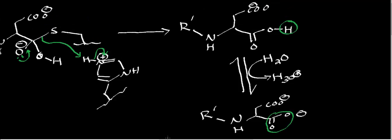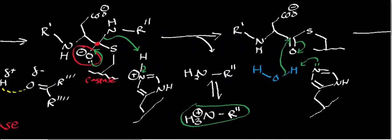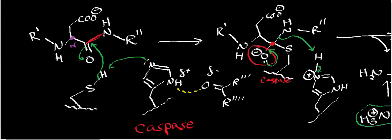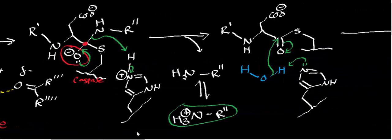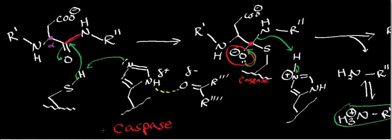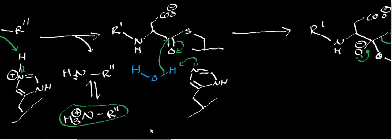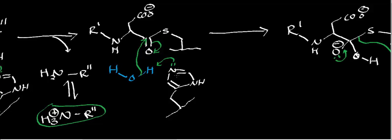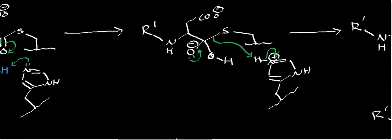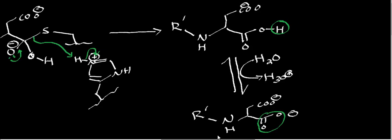What I also want to show you about the protease mechanism is that it's actually very sequential — and this goes for both cysteine proteases and serine proteases. Notice what's happening: deprotonate the nucleophile, nucleophilic attack, generation of tetrahedral intermediate, pi bond reforms, and we lose a leaving group. We're just doing nucleophilic acyl substitutions from Organic Chemistry 2. The same thing happens again: deprotonate the nucleophile, nucleophilic attack, generation of tetrahedral intermediate, pi bond reforms, and we get our leaving group.